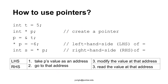How do we use a pointer? There are two different ways, depending on whether the asterisk is on the left-hand side (LHS) or the right-hand side (RHS) of the equal sign. Either side has three steps, and the first two steps are the same. The first step takes p's value as the address. The second step goes to that address. The third step is different: for the left-hand side, it modifies the value at that address; for the right-hand side, it reads the value stored at that address.